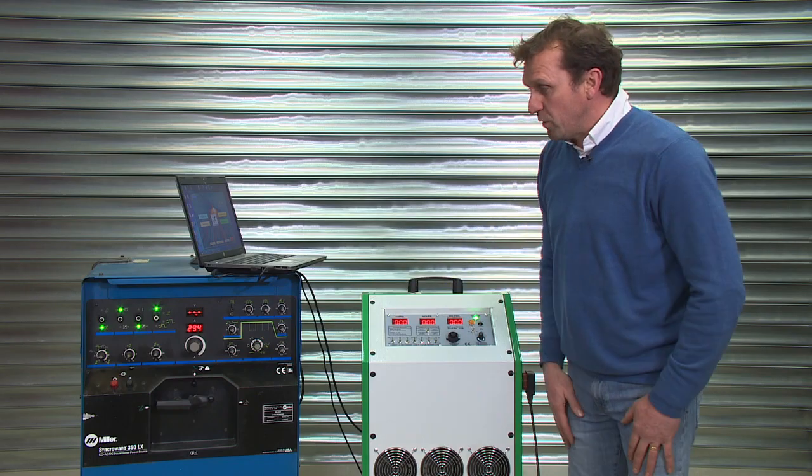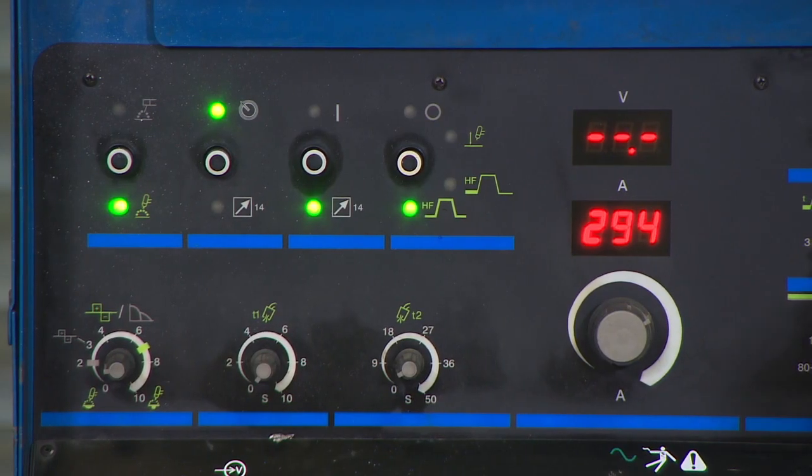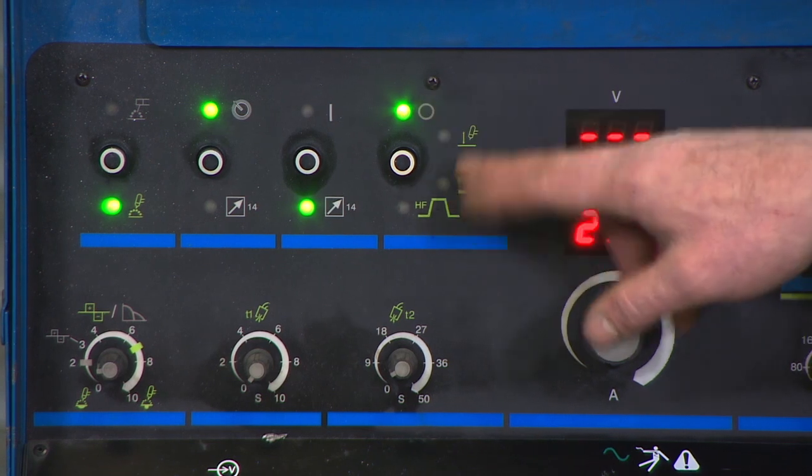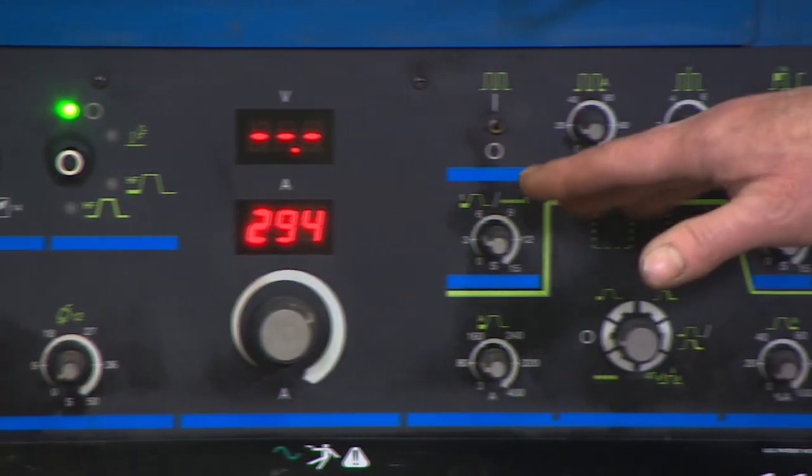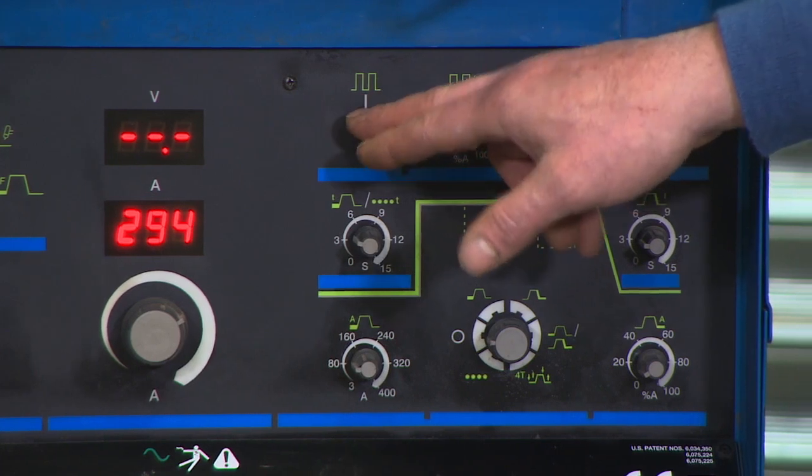So we're connected up as before. It's important to remember with any TIG machine to turn the HF off or into the lift TIG mode. And if there's any pulsing functions, turn those to the off position as well.